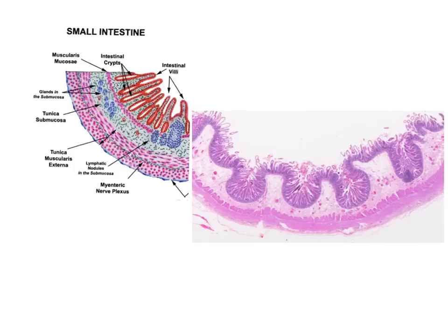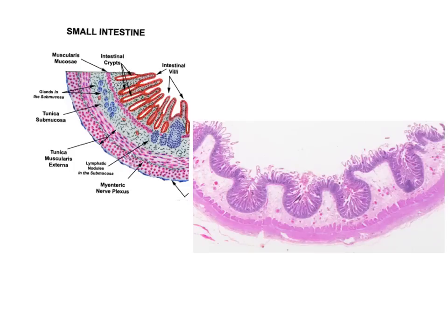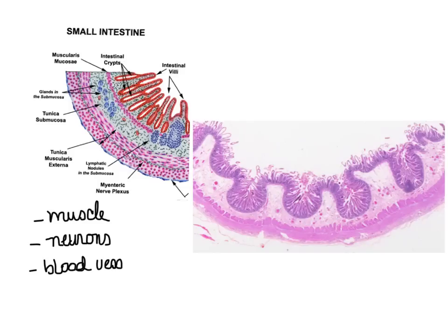A section through the wall of a small intestine, shown here in picture form as well as in diagram form, indicates that there aren't just epithelial cells required to perform the overall function of the small intestine. There are additional tissues required, such as muscle cells, nervous tissue or neurons, and connective tissues — specifically blood vessels and blood — that are critical to the overall function. Let's take, for example, the muscle tissue.